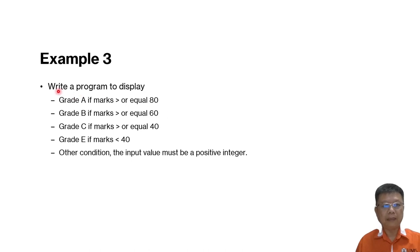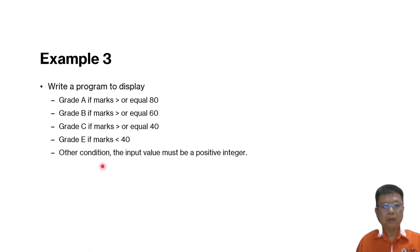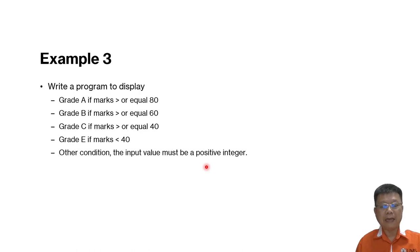The third example is a little bit more complicated. Although grades A, B, C, D, E are the same, we have one more condition: the input value must be a positive integer. So which means if it is not positive — if it is negative — then we will display a wrong message. Let's try it. We have one more condition in this case: the input value must be positive.